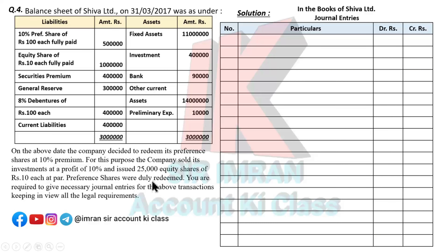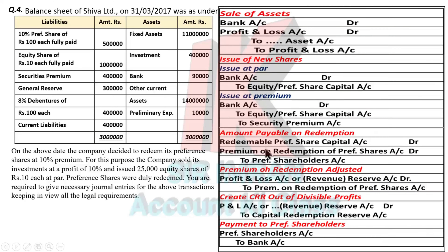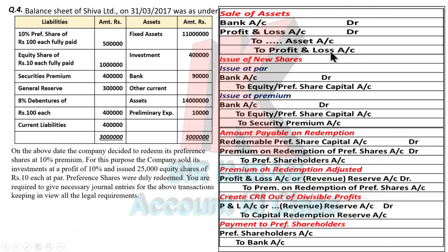Remember the general entry format I explained in the introduction — that is the first condition. Before redemption, if shares are not fully paid up, you must pass entries for first call, call-in-arrears, recovery, then sale of assets, then new issue, and then start redemption. The important point is: shares must be fully paid up before they can be redeemed. If not fully paid up, redemption cannot happen.